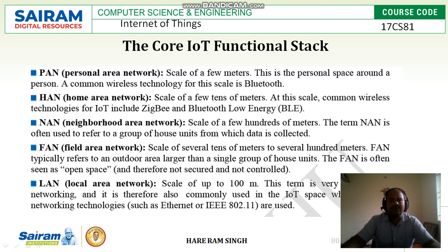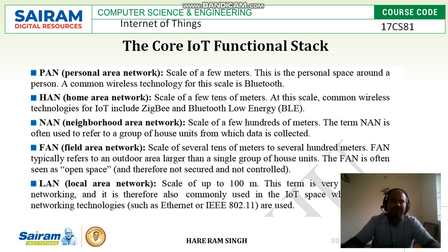PAN operates at a scale of a few meters — this is the personal space around a person. A common wireless technology for this scale is Bluetooth. It works within the personal area network, within a few meters, and has some range around objects where it can be detected by the receiver.